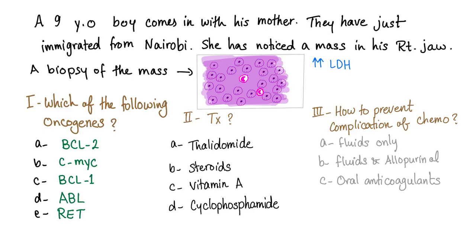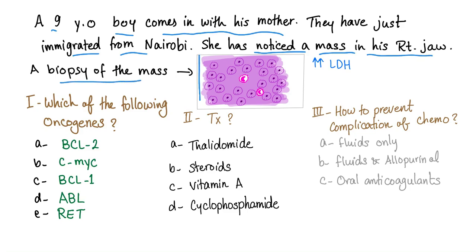Hey guys, it's Medicosis Perfectionalis, and we have a new case today. You have a 9-year-old boy coming in with his mother. They have just emigrated from Nairobi. She has noticed a mass in his right jaw, and the biopsy of the mass is here. There is increased LDH in the blood. Which of the following oncogenes is involved in this condition?